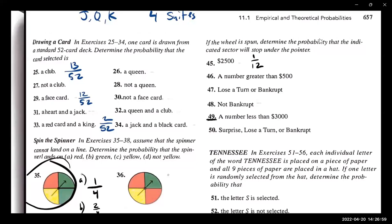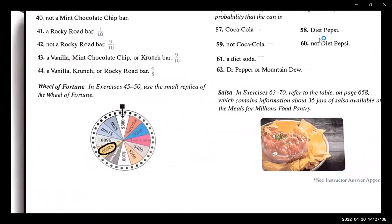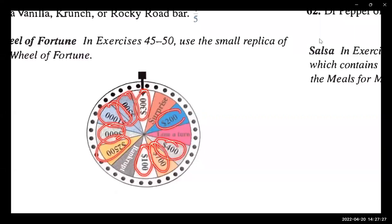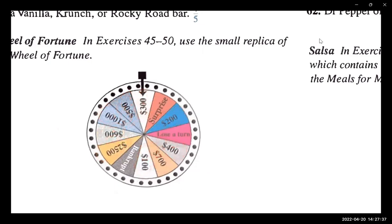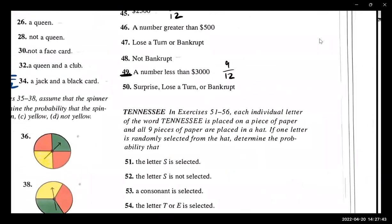Let's go to number 49 — a number less than 3,000. Looking at the wheel with sectors valued at 10, 12, and 6 among others, counting the sectors with numbers less than 3,000: there are nine numbers that are under 3,000. So nine out of 12.